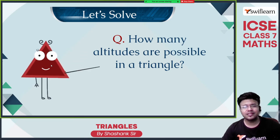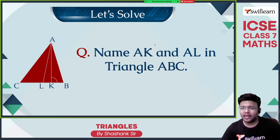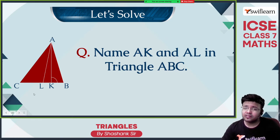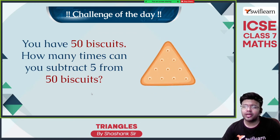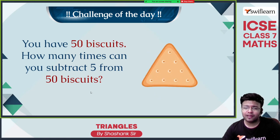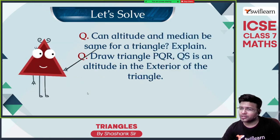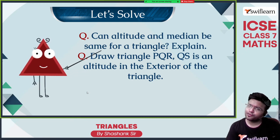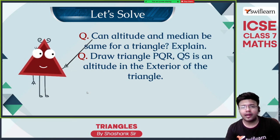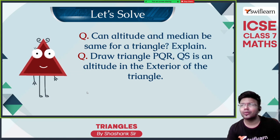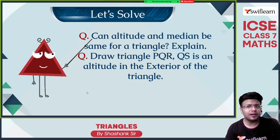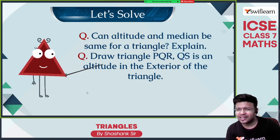How many altitudes are possible in a triangle? 3 altitudes are possible. Name AK and AL in the triangle. From the triangle, AL is the midpoint of a side, so AL is the median and AK is the altitude. Can the altitude and median of a triangle be the same? If it is an equilateral triangle, the altitudes and medians are the same — all 3 altitudes and all 3 medians coincide. If it is an isosceles triangle, 1 altitude and 1 median are the same, but the remaining are not. If it is a scalene triangle, they are not the same.